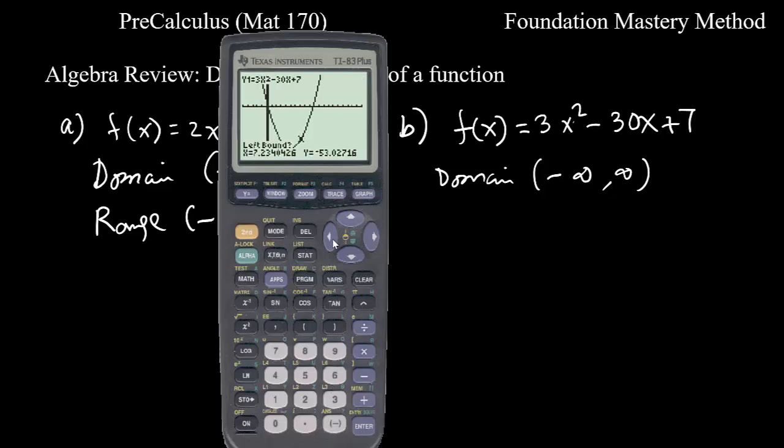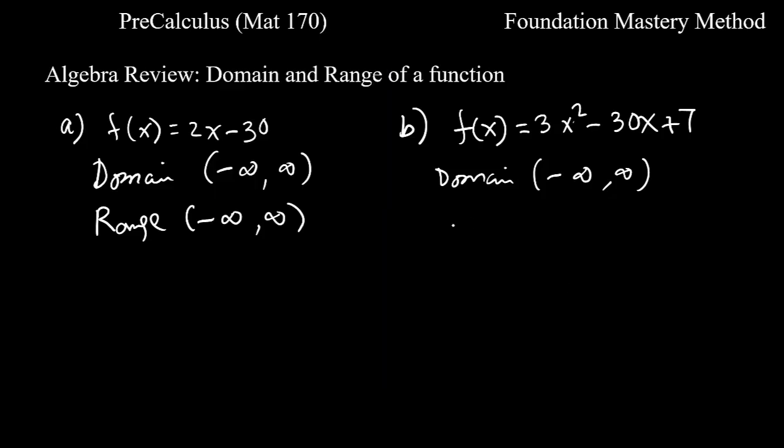It's asking for the left bound, go to the left side, hit enter, move it to the right side for right bound and enter one more time. You can see it is 5 for x and y is negative 68. We need y, so in this case the range is negative 68 to infinity.